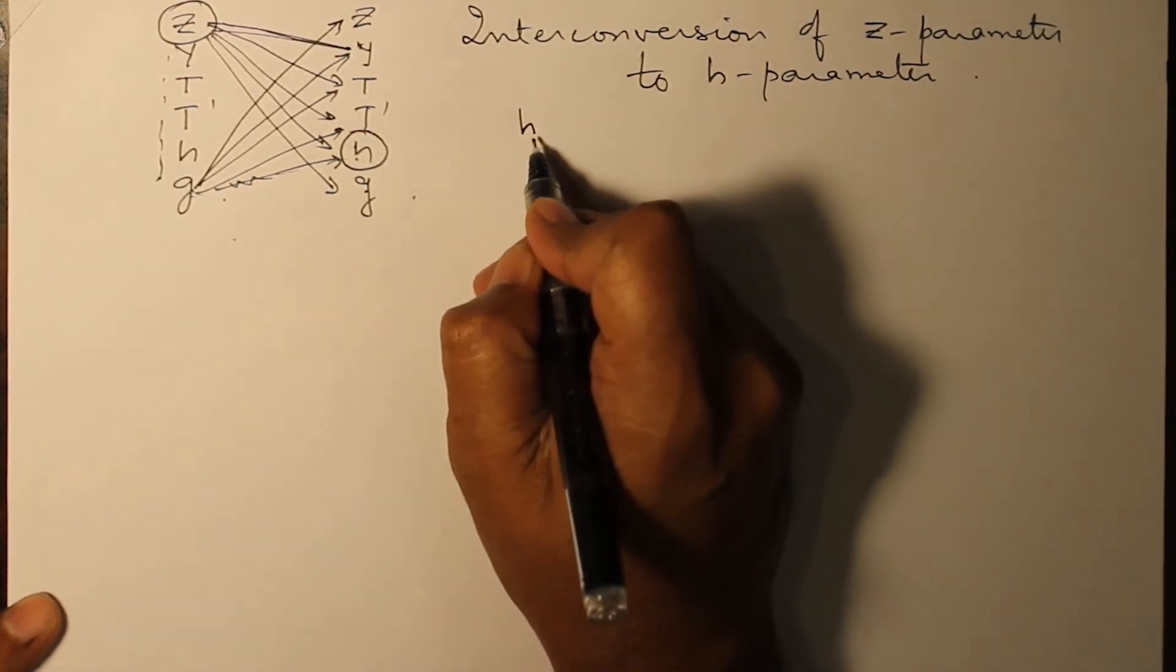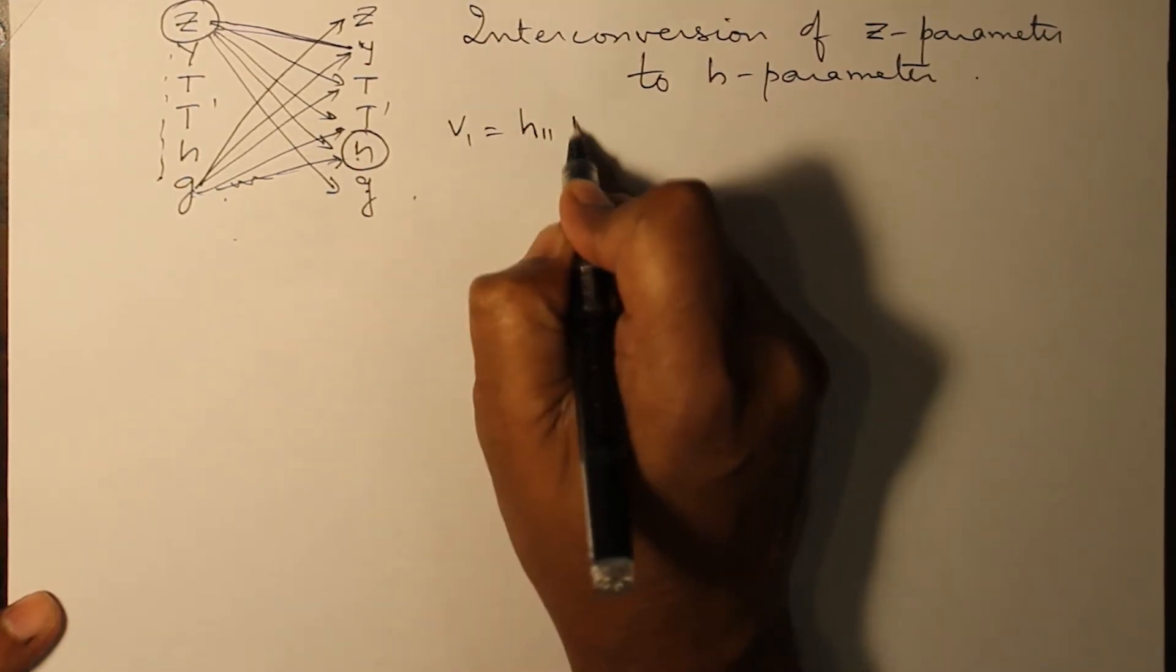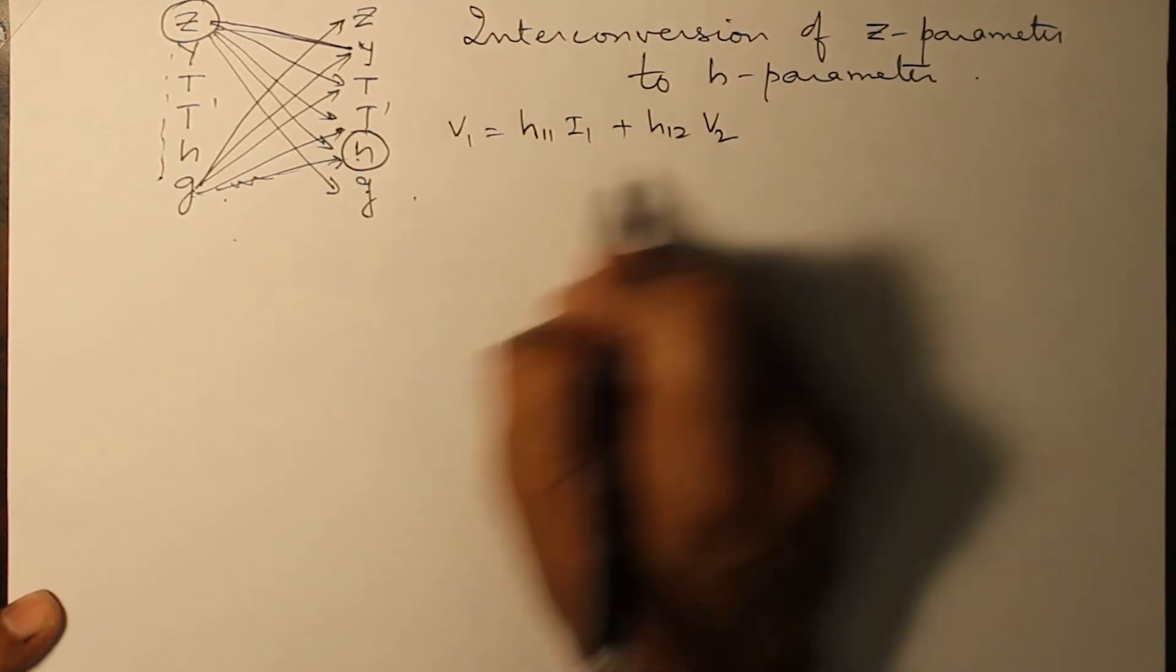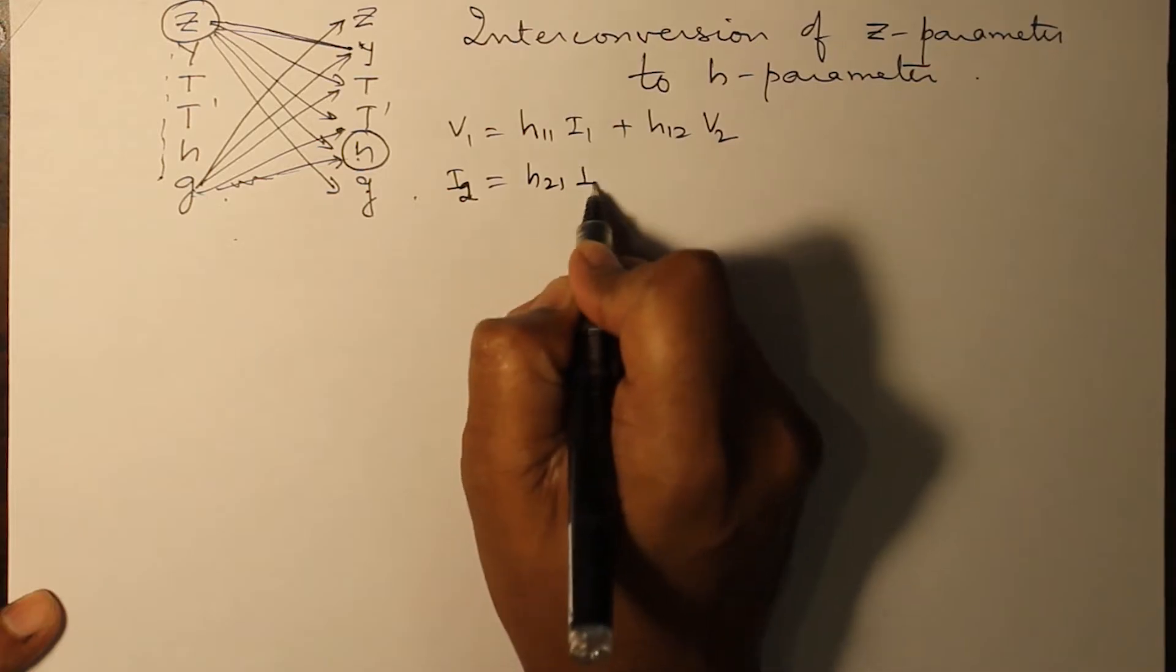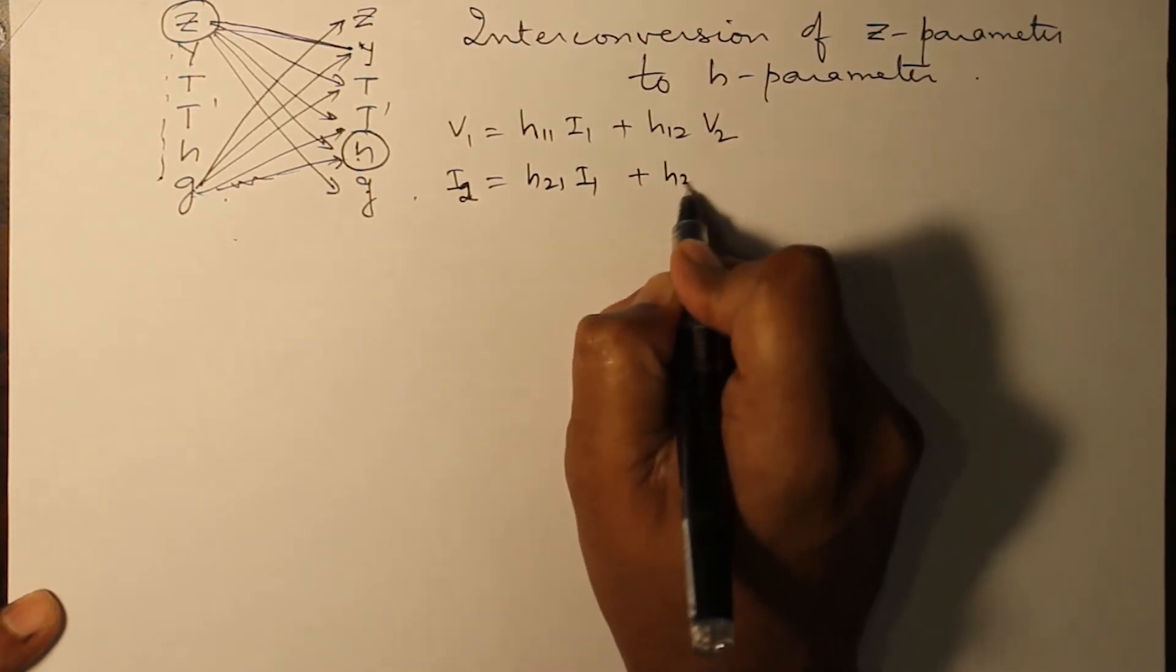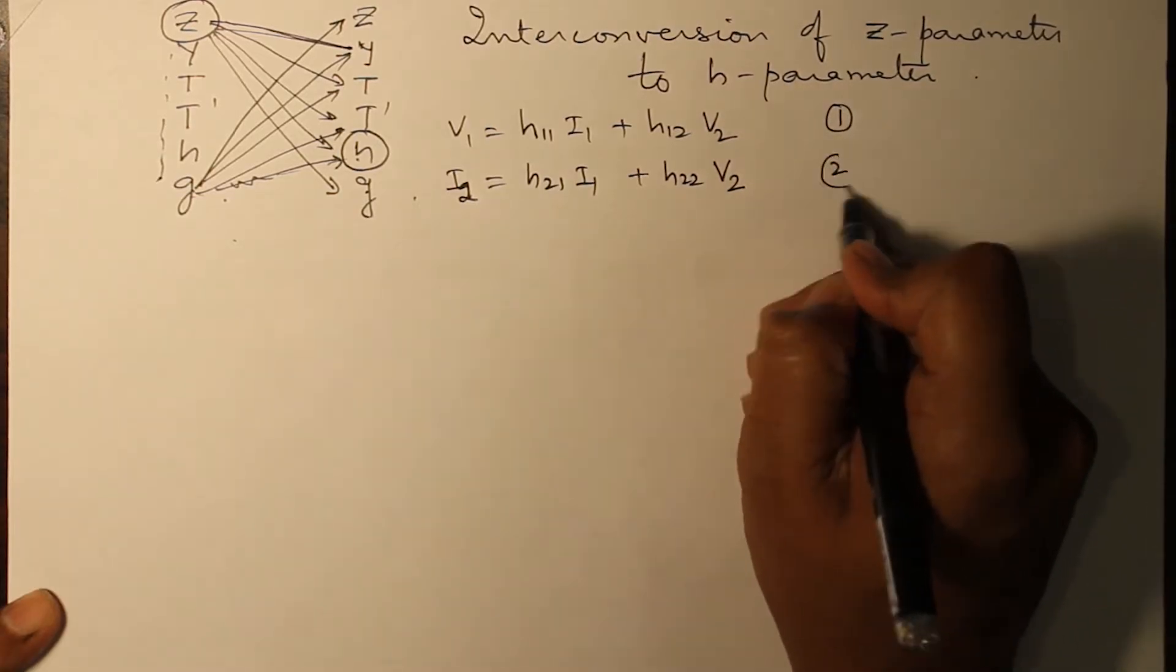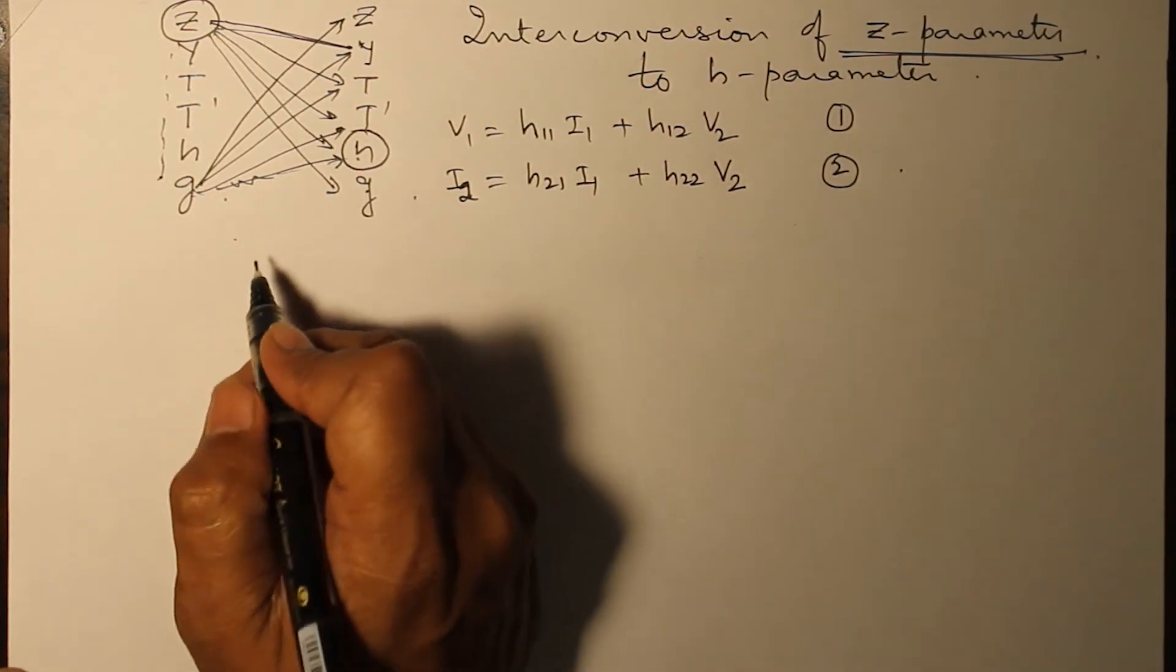What you want to find out, write down as equation one and two. So V1 equals H11 I1 plus H12 V2. This is I2 equals H21 I1 plus H22 V2. This is what we want to find out.